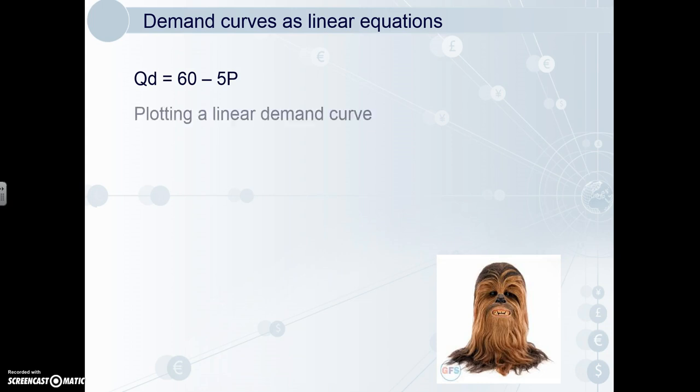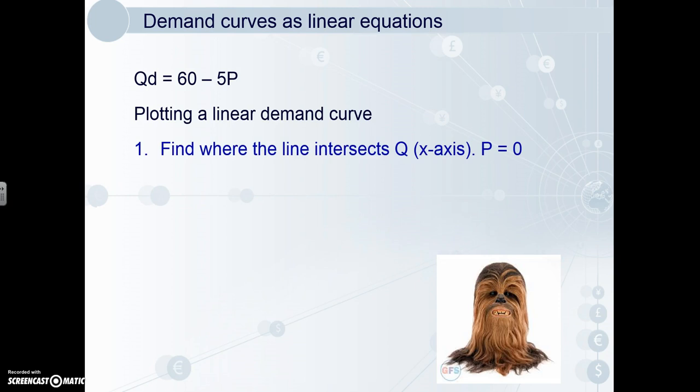There are four steps to take to plot a linear demand equation. Number one, we find where the line intersects Q, or the x-axis — this is where price equals zero. So we just substitute that into the equation, do some very simple maths, and we get that the quantity demanded at price zero is 60.